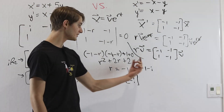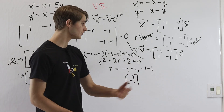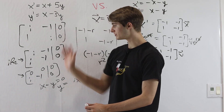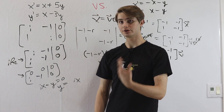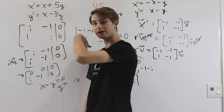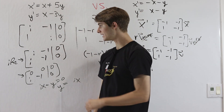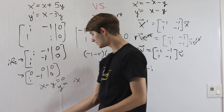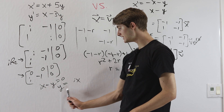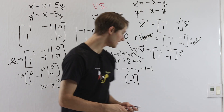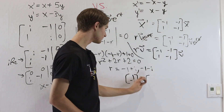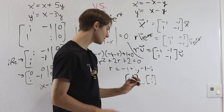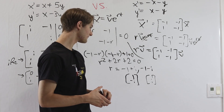For the second eigenvalue r equals negative 1 minus i, by the same process we end up with y equals positive i times x. So the eigenvector is 1, positive i.